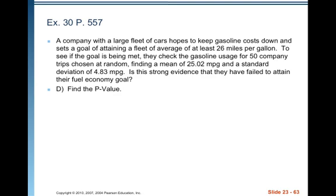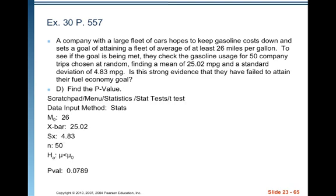To find the p-value, go to scratchpad, menu, statistics, stat test, T-test. We have summary statistics: mu-naught = 26, x-bar = 25.02, standard deviation = 4.83, n = 50, and our alternative is mu < mu-naught. We get a p-value of 0.0789.